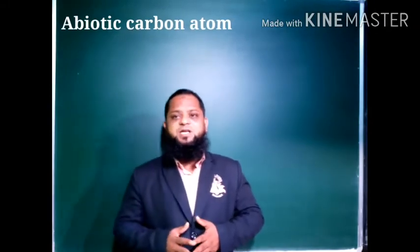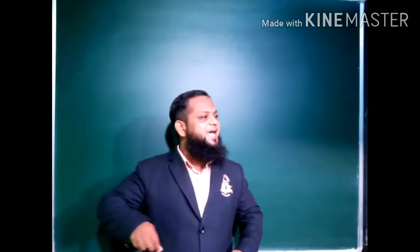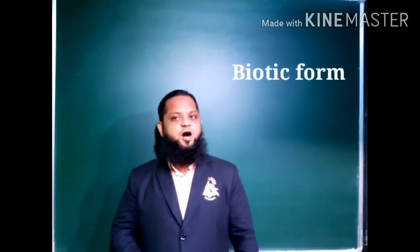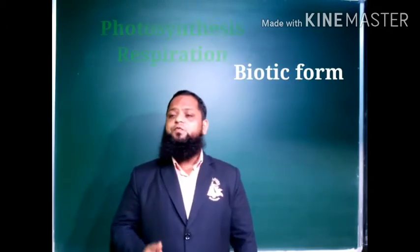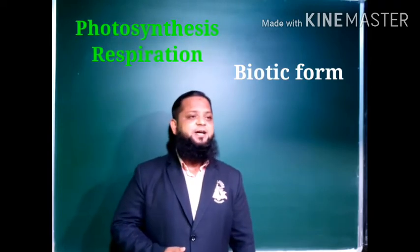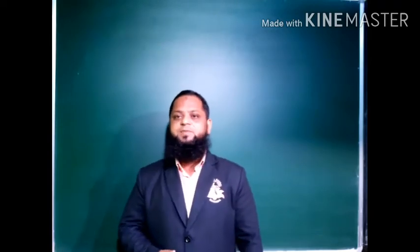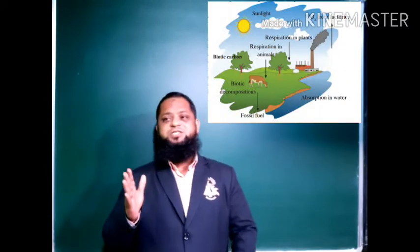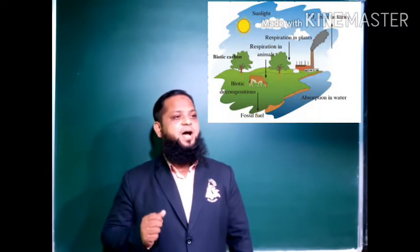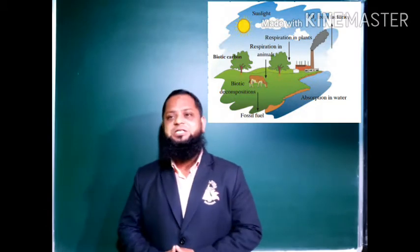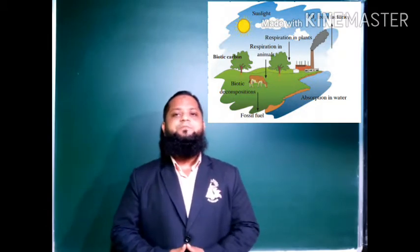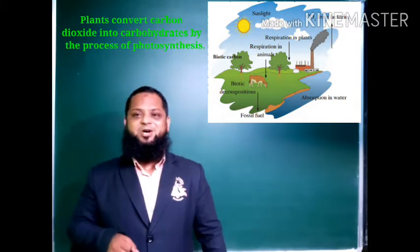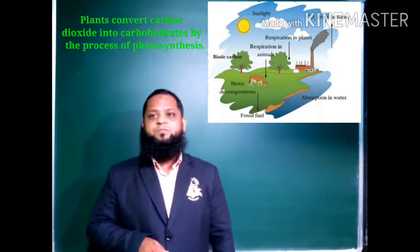Abiotic carbon atoms are circulated and recycled into biotic form, mainly through photosynthesis and respiration. The carbon cycle is one of the most important biogeochemical cycles. Plants convert carbon dioxide into carbohydrates by the process of photosynthesis.